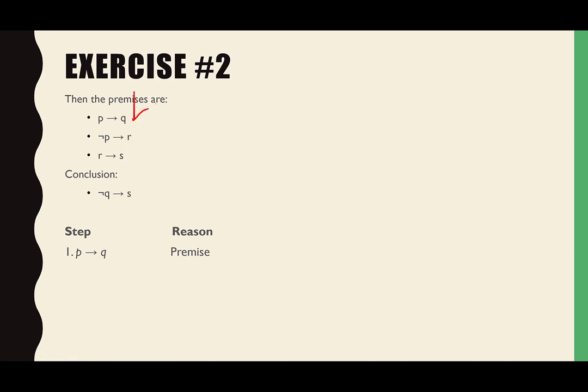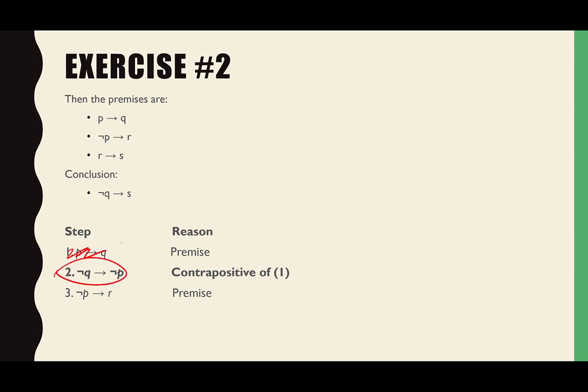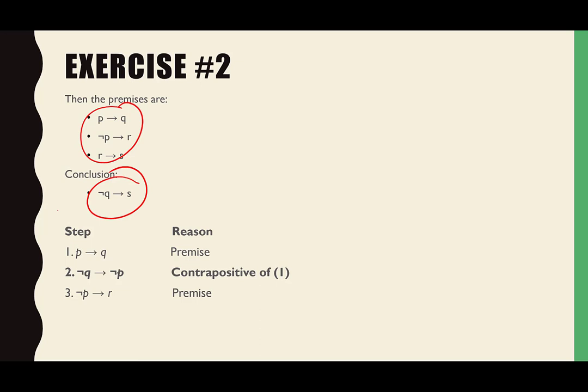Start with premise one: P therefore Q. Step two: find the contrapositive — not-Q therefore not-P. We need the contrapositive because it wasn't going to go anywhere otherwise, and it gives us a not-Q. The contrapositive is a logical equivalence from day one. Now let's look at the second premise and see what we can do with it.